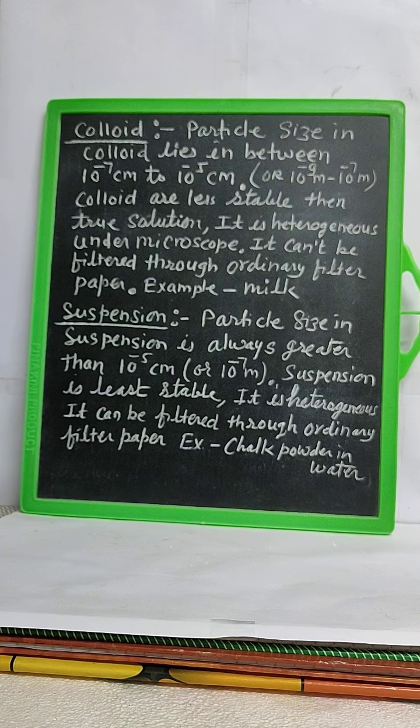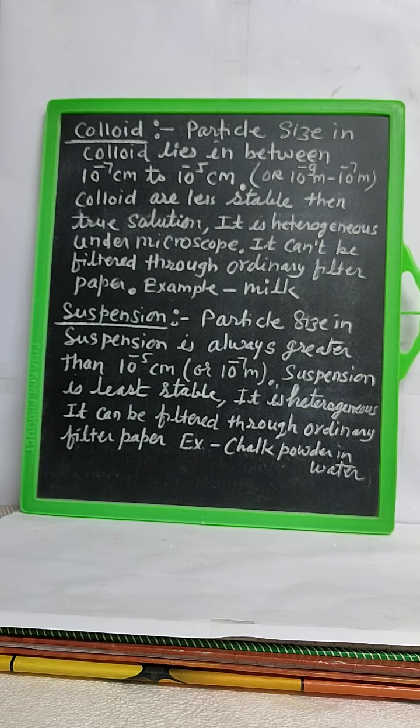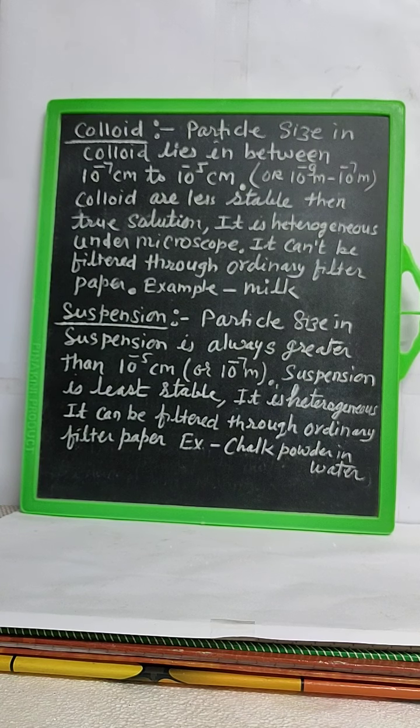Colloids are heterogeneous under microscope. They cannot be filtered through ordinary filter paper. For example, milk.